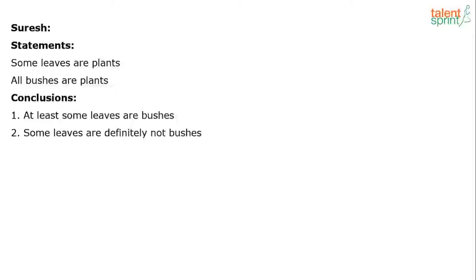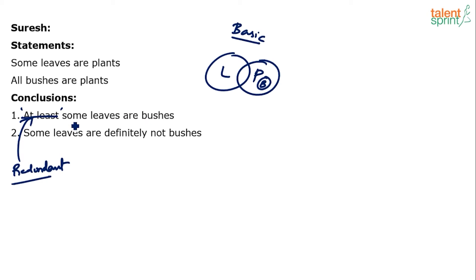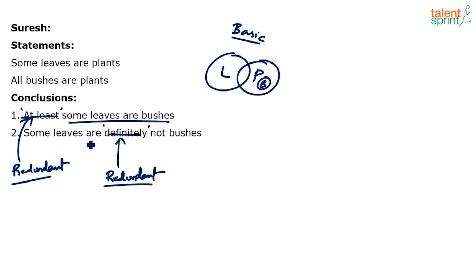The answer to question 1 is C — only one and two follow. Now question 2 has two statements and two conclusions, so it's a fairly basic diagram. Statements: some leaves are plants, all bushes are plants. That's the basic diagram — some leaves are plants and all bushes are inside plants. Now the conclusions: 'at least some leaves are bushes' — note that 'at least some' and 'some' mean the same thing; the phrase 'at least' is redundant.